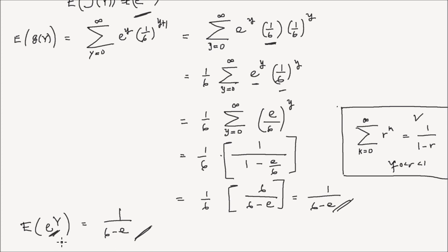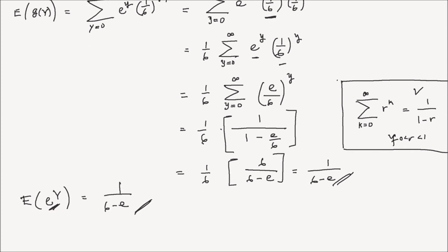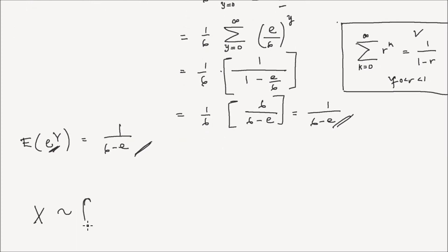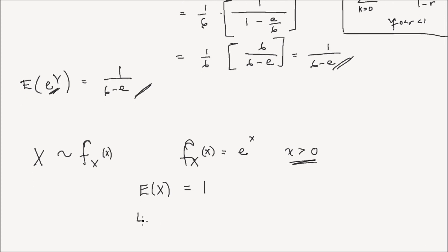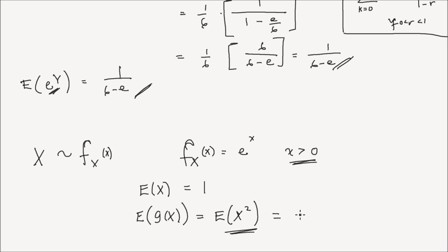Let me leave you with an exercise. Say we have a random variable x with PDF f_x(x) equal to e^(−x) for x greater than 0. Find the expected value of x — you should get 1. Also find the expected value of the function g(x) = x², and your answer should be 2.